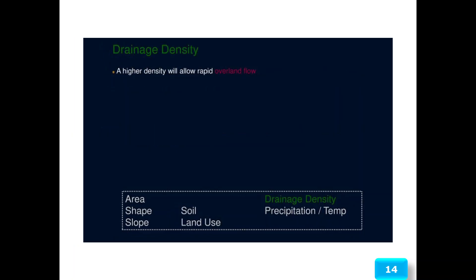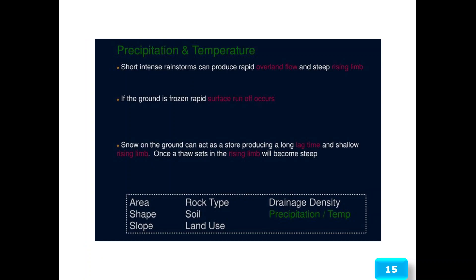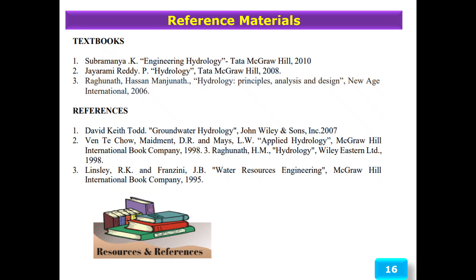Drainage density: a higher density will allow rapid overland flow. Precipitation and temperature: short intense rainstorms can produce rapid overland flow and a steep rising limb. If frozen ground is present, rapid surface runoff occurs. Snow on the ground can act as a store, producing a long lag time and a shallow rising limb, but once a thaw sets in the rising limb will become steep. These are the reference materials. Thank you.